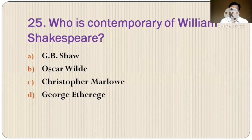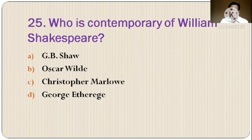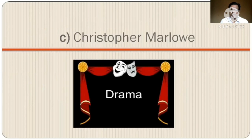Question 25: Who is a contemporary of William Shakespeare? The options are: A) G.B. Shaw, B) Oscar Wilde, C) Christopher Marlowe, D) George Atherch. The correct option is option C, Christopher Marlowe.